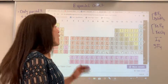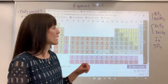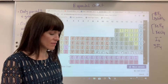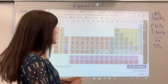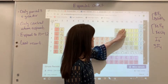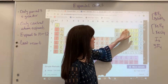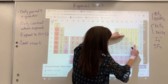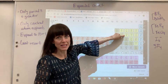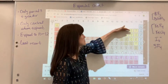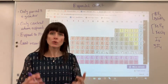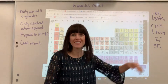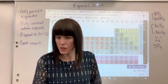Only nonmetals that are in period three or greater will expand, so there's really not a lot of elements that can expand their octets. Here's period three — if you're only looking from phosphorus on, those are the elements that can expand. Your period two — carbon, nitrogen, oxygen, fluorine — those cannot expand. Those can never expand. It's only this small group that can expand.